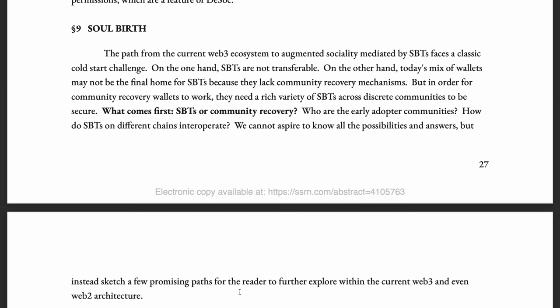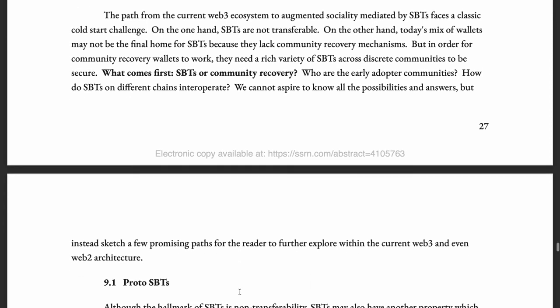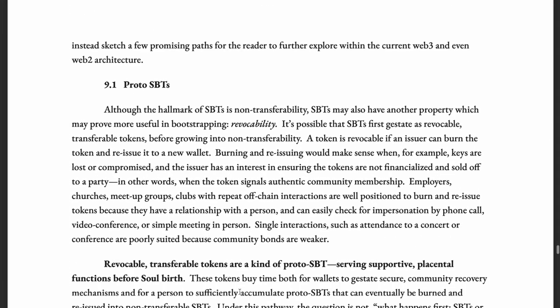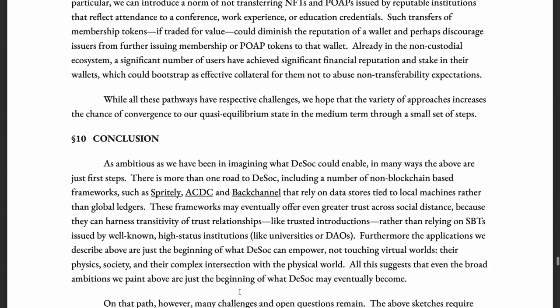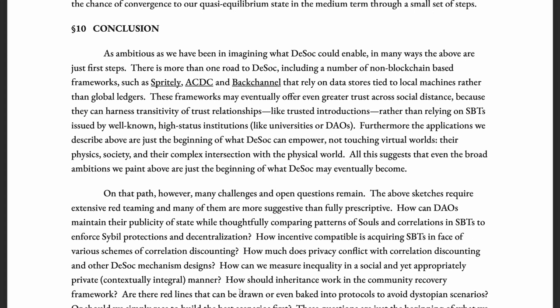Moving on to the section on soul worth — how do we create SBTs. Since currently wallets don't support community recovery mechanisms, some solutions include: first, proto-SBTs which are revocable — they can be burned and reissued — so as a starting point we can have SBTs that are transferable but revocable; second, community recovery wallets and proto-souls. We can talk about these community recovery solutions in more detail in a follow-up video.